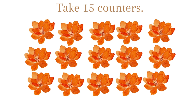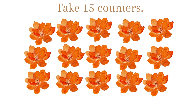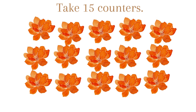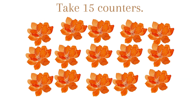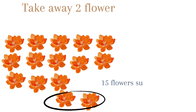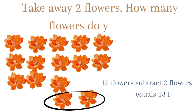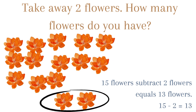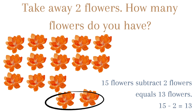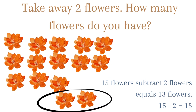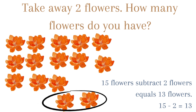Take 15 counters. Take away 2 flowers. How many flowers do you have? 15 flowers subtract 2 flowers equals 13 flowers. 15 minus 2 equals 13.